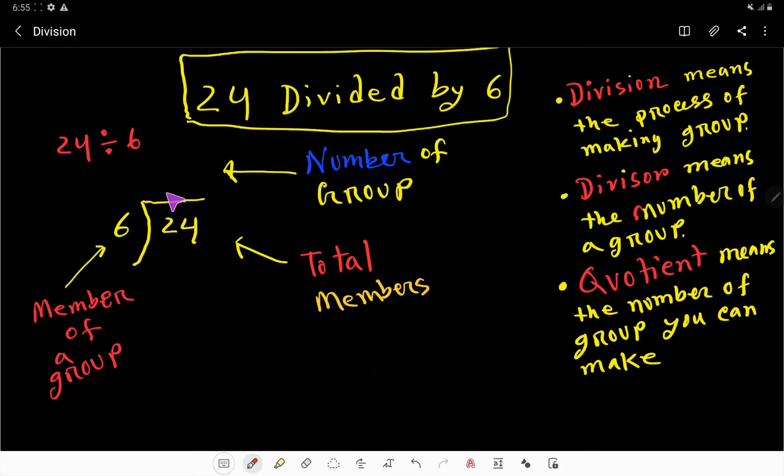That is, quotient means the number of groups, divisor means member of group, and dividend means total members, right? So to do this division we have to know the multiplication table.